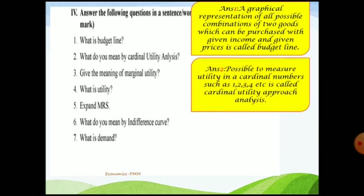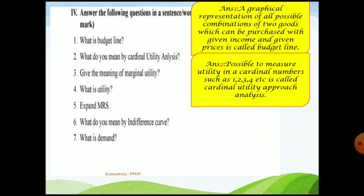Next: what do you mean by cardinal utility analysis? We discussed ordinal earlier; this is cardinal. In cardinal utility analysis, we measure utility in cardinal numbers such as 1, 2, 3, 4, etc. If measuring in terms of numbers it is cardinal utility analysis; if measuring in terms of ranks or preferences it is ordinal. The law of diminishing marginal utility is part of the cardinal utility analysis given by Professor Alfred Marshall.